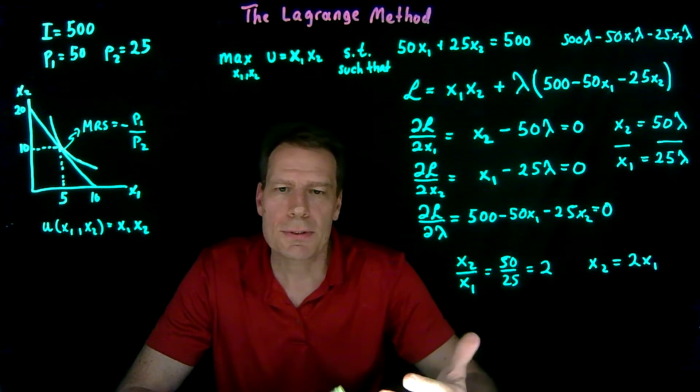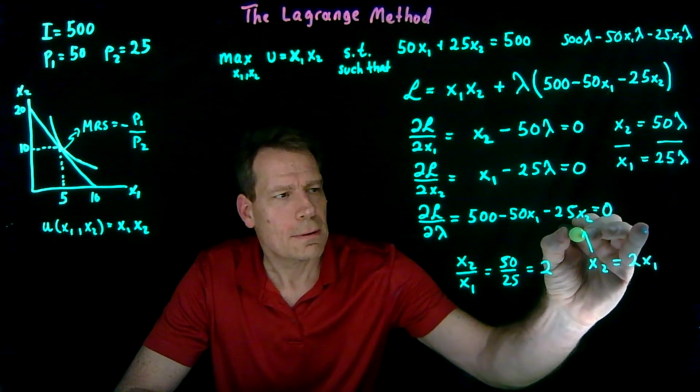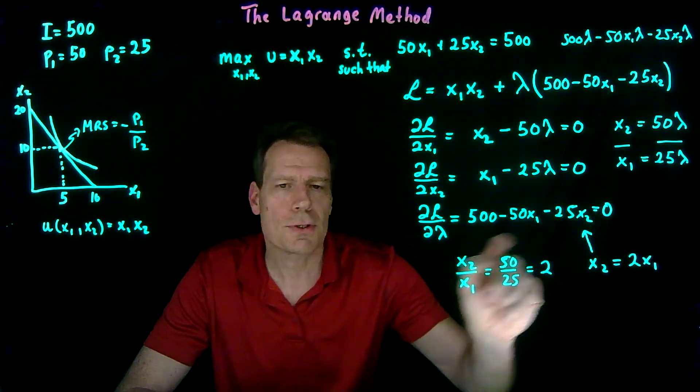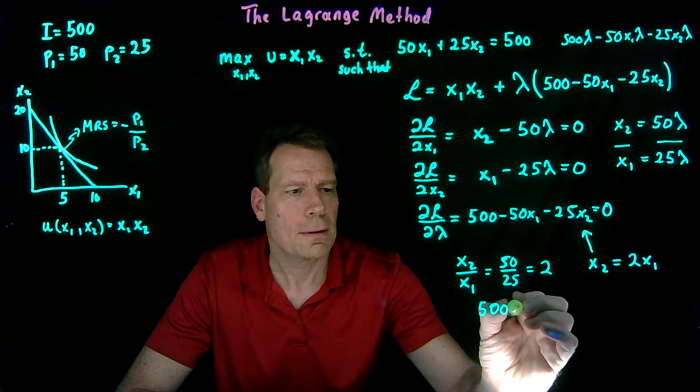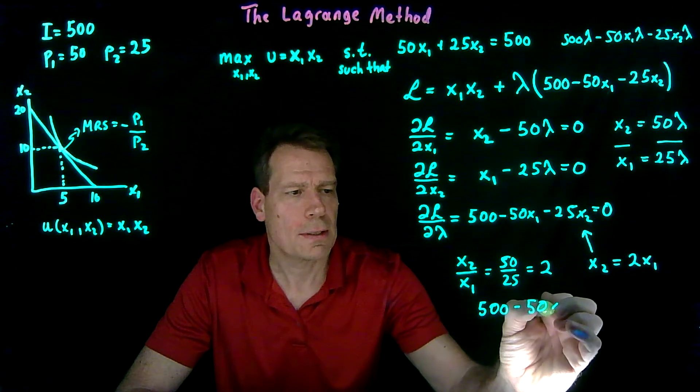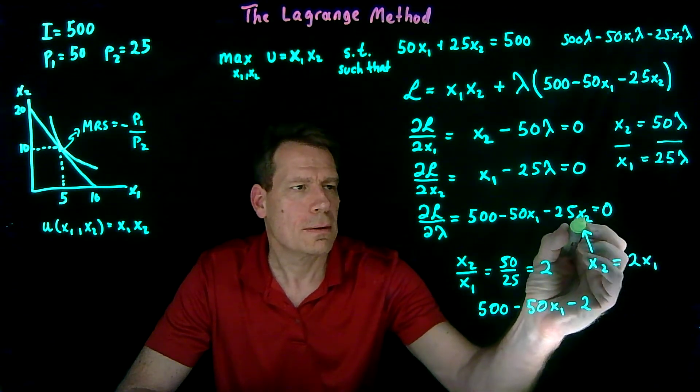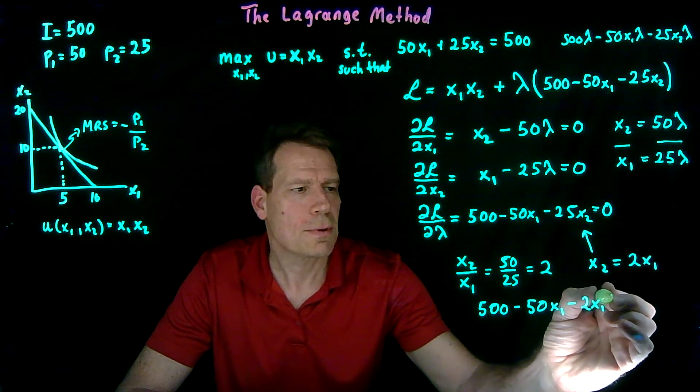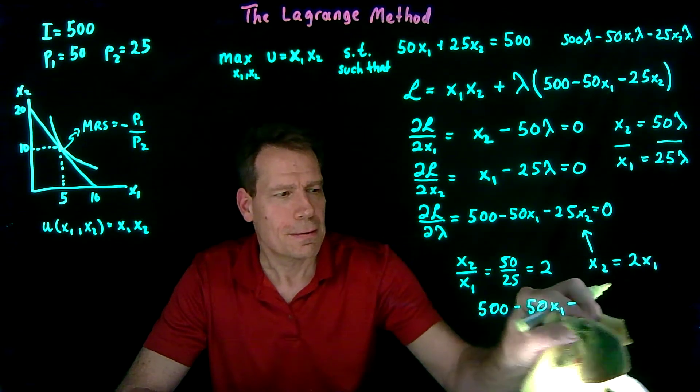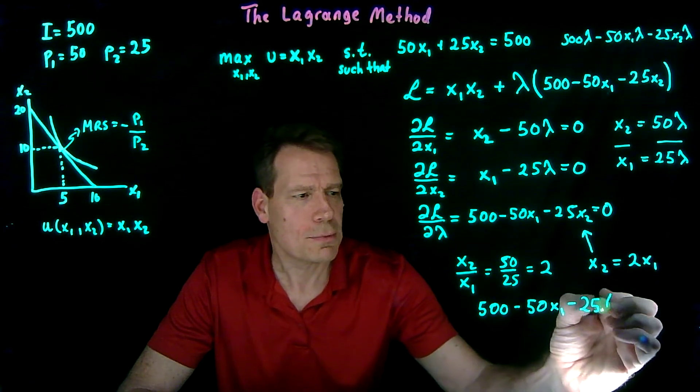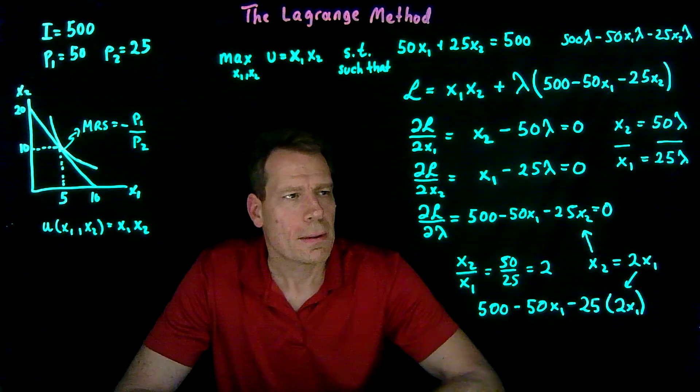Finally, we can take this equation, which is just the budget equation, and substitute the x2 in here so that we get an equation of just one variable, just the x1. So we'll get 500 minus 50 times x1 minus 2 times x1 times 25. Actually, let me write this. 25 times 2x1, so we see exactly where it came from.